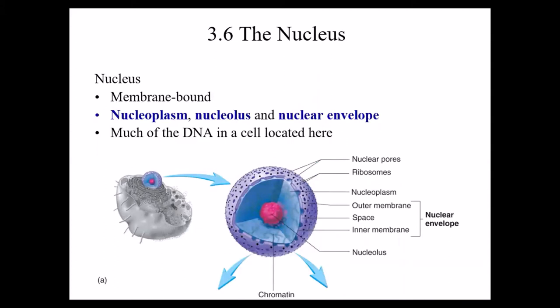Section six talks about the nucleus. The nucleus is a membrane-bound organelle with a membrane around it — sometimes called the nuclear envelope — which has openings or pores that allow certain things to move in and out of the nucleus. Inside the nucleus, you have another structure called a nucleolus, where ribosomal RNA is produced. This is also where most of the cell's DNA is located, although remember we said that you do have some DNA in your mitochondria organelles as well.